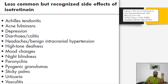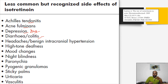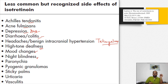Other adverse effects include Achilles tendonitis, acne fulminans, depression, diarrhea and colitis — isotretinoin has been implicated in triggering irritable bowel syndrome or inflammatory bowel disease, though evidence is not firmly connecting. Headache or benign intracranial hypertension is seen with tetracycline combination. High-tone deafness, night blindness, paronychia, pyogenic granulomas, urticaria, vasculitis, and sticky palms are also reported — pyogenic granulomas being an uncommon but notable side effect.